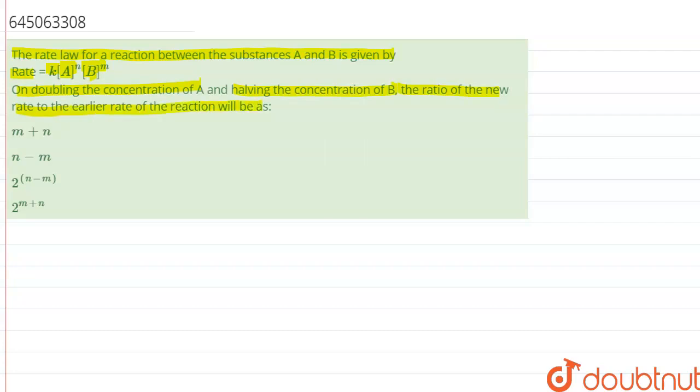So let us start this question. We have been given that rate equals K into A raised to power N and B raised to power M.